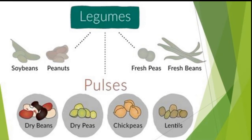Legumes such as soybeans and peanuts are part of the broader pulse category, though there is no strict criterion to distinguish legumes from pulses. It is generally said that crops which fix atmospheric nitrogen are known as legumes, and legumes are typically bigger in size than pulse grains. Soya beans, peanuts, fresh peas and fresh beans are considered legumes, while dry beans, dry peas, chickpeas and lentils in dried form are known as pulses.